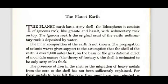The planet Earth has a stone shell, a lithosphere. It consists of igneous rock, like granite and basalt, with sedimentary rock on top. The igneous rock is the original crust of the Earth. Sedimentary rock is deposited by water.